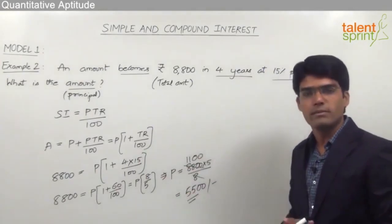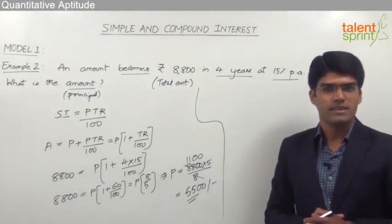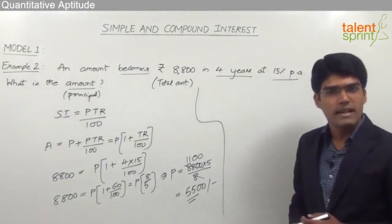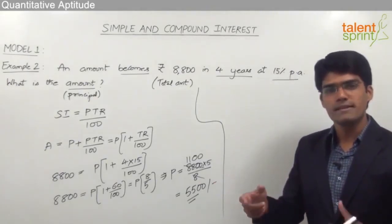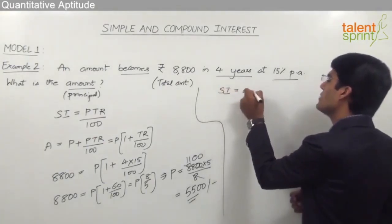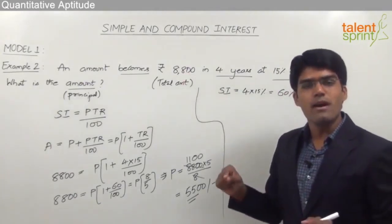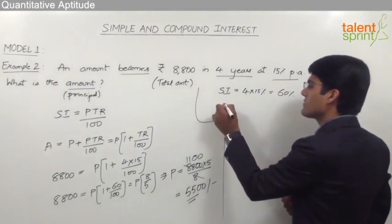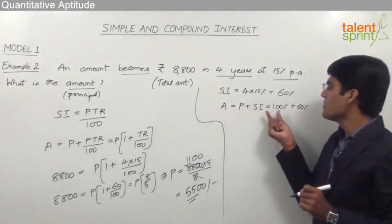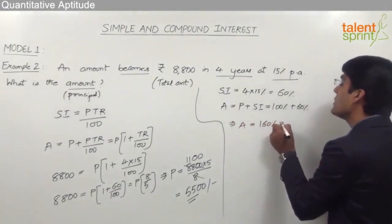Now let us look at the smart way of solving this using percentages. The time period is 4 years and rate is 15% per annum, so every year we get 15%. In 4 years the total interest accrued is 15% × 4 = 60%. Total amount equals principal plus SI, which is 100% + 60% = 160%, and 160% is equivalent to 8,800.